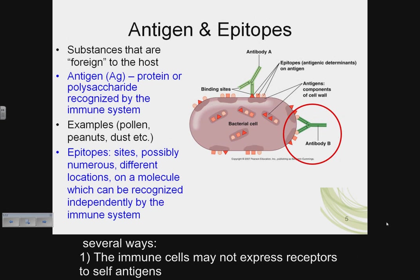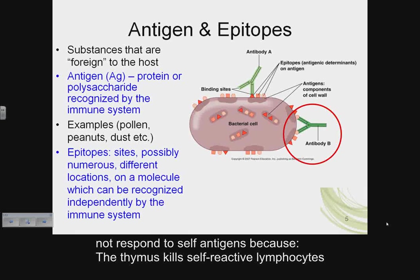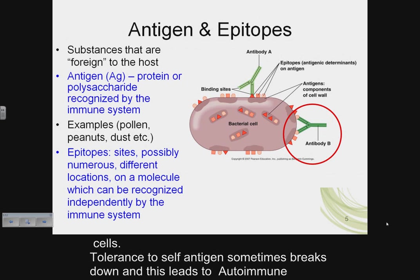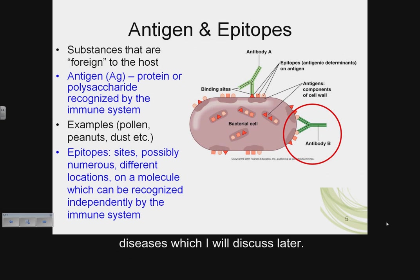How does this happen? Several ways: one, the immune cells may not express receptors to self-antigens; two, T cells do not respond to self-antigens because the thymus kills self-reactive lymphocytes; or other immune cells inactivate lymphocytes that could be reactive to your own cells. Tolerance to self-antigen sometimes breaks down, and this leads to autoimmune diseases.